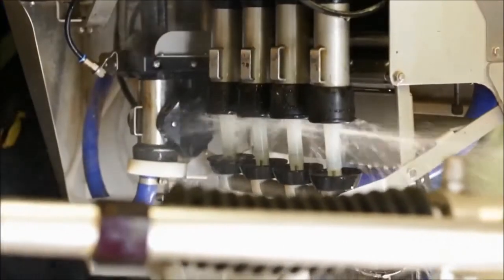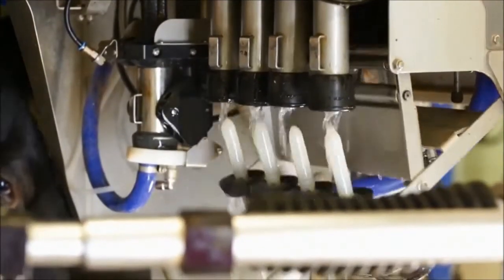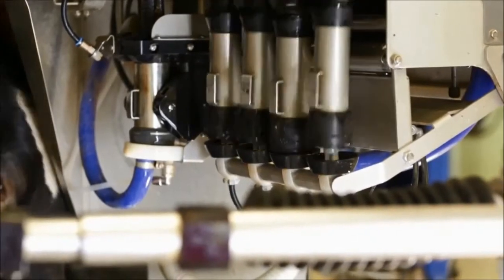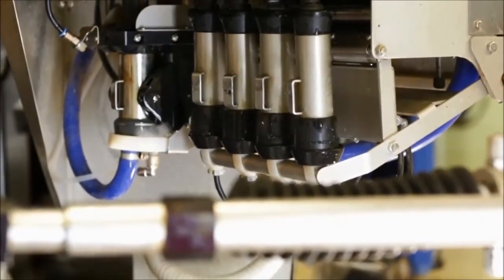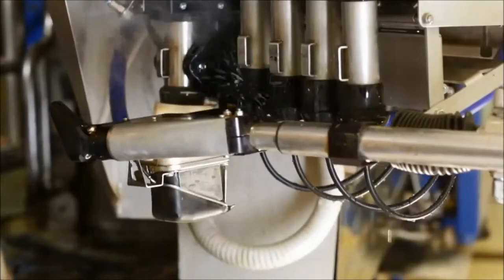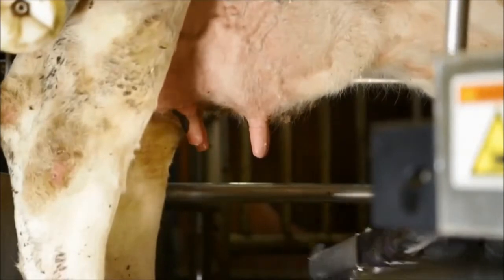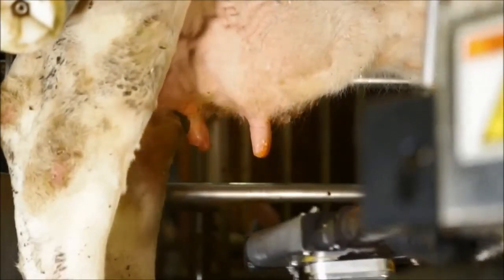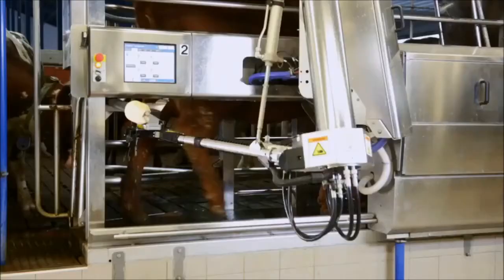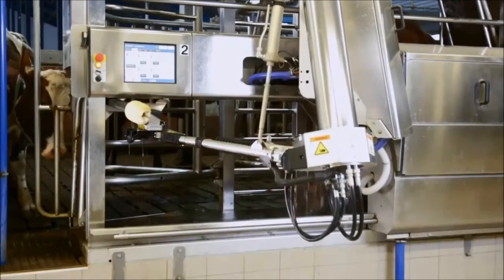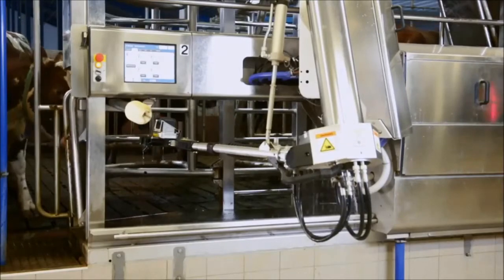All cups are rinsed inside and out between each cow, and then face down, so they can drain and stay free of bacteria. All teats are also disinfected after milking. Programmable automatic floor cleaning allows your cows to stand on a clean surface, and saves a lot of water compared to manual cleaning.